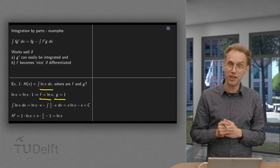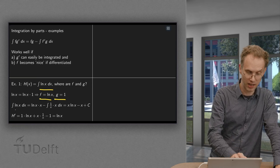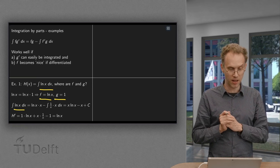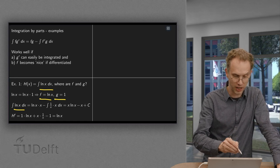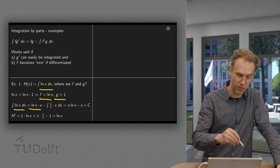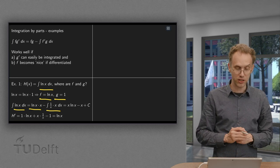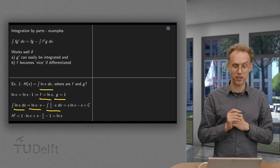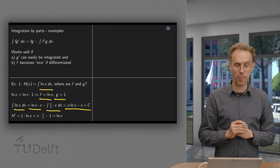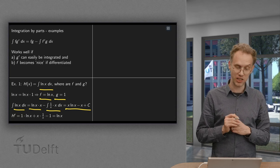So for f we can pick ln(x) and for g prime we can pick 1, and we can easily compute the antiderivative of g. So we get: ln(x) times x, minus the derivative of ln(x) which is 1/x, times x. That gives us x·ln(x) minus the antiderivative of 1, which equals x.